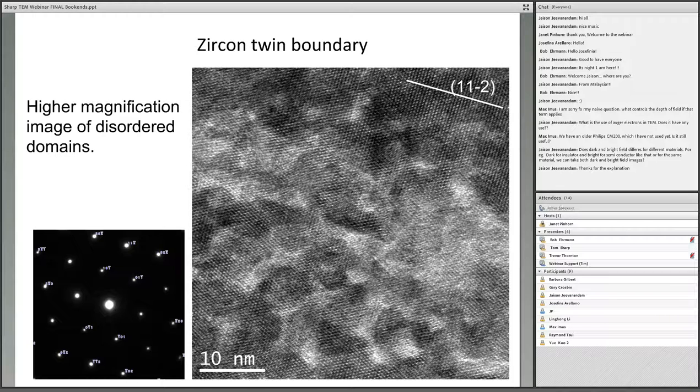There was another question that said, I have access to a CM200, is that still useful? These images were taken on a CM200. It's actually a very nice microscope and still very useful. I also want to mention that joining us today as discussants are Bob Ehrman from Penn State and Trevor Thornton from ASU.